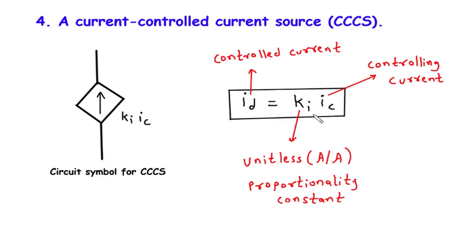Now let's discuss some practical applications of the CCCS. One common use is in amplifier circuits. By employing a CCCS, we can control the amplification of a signal by adjusting the controlling current. This enables us to increase or decrease the output current, which in turn affects the amplification level of the circuit. Another application of the CCCS is in feedback systems, which rely on maintaining stability and precision by adjusting the output based on specific conditions. The CCCS allows us to precisely control the output current by manipulating the controlling current, thus enabling effective feedback control.